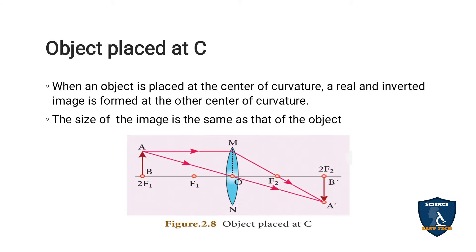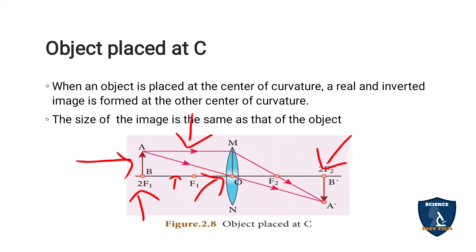Object placed at C, that is exactly at 2F. Using the same two rules — basic rule 1 (passes through optic center) and basic rule 2 (parallel to principal axis) — after refraction, the image is formed at the other side of the curvature, at C. The image is inverted, and the size of the object and the image are the same.